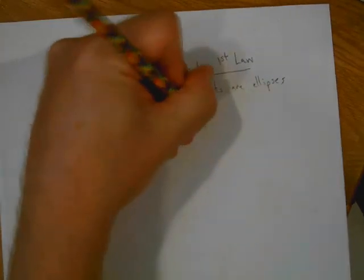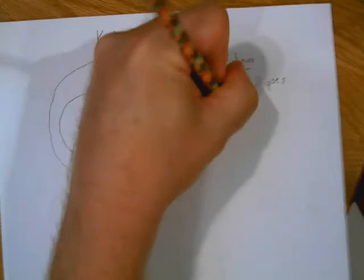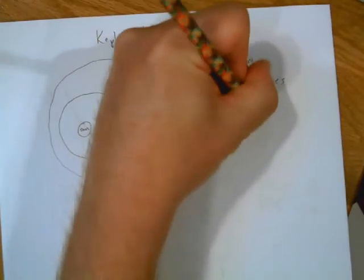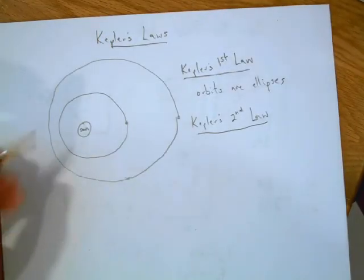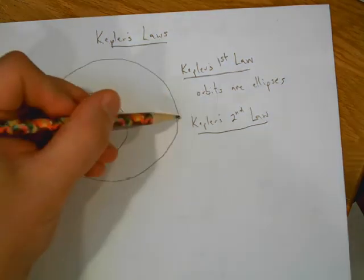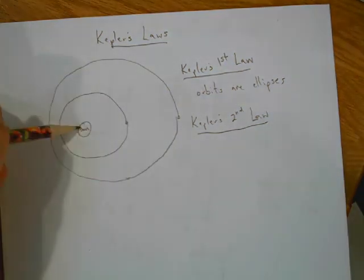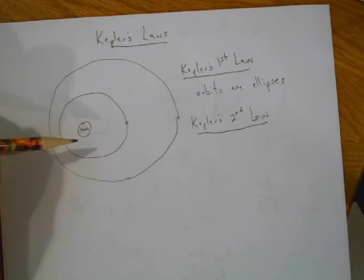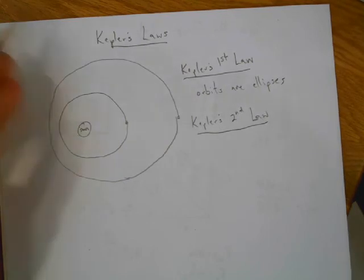Kepler's second law - you should have noticed this, that as the planet gets closer to the sun, it speeds up. As it moves away from the sun, it slows down.